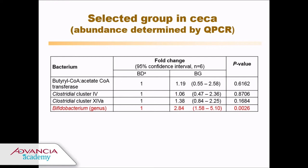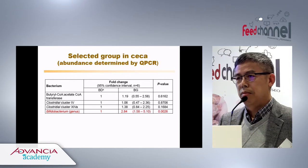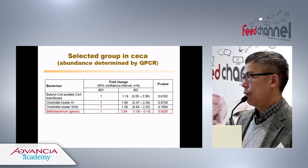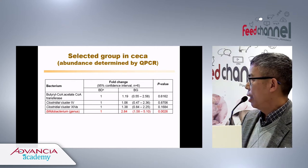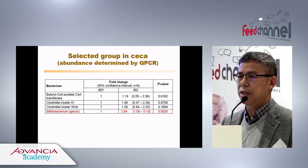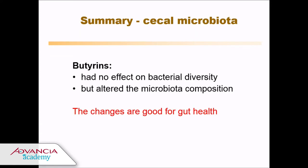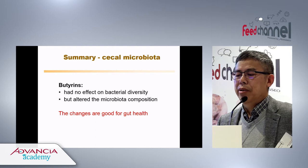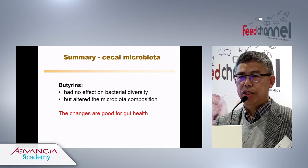We followed up with qPCR analysis measuring key enzymes for butyrate production and didn't see a difference between groups. For Clostridium clusters — major butyrate-producing bacteria — we also saw no significant difference. However, for Bifidobacteria we again saw increased density, and from the 16S data, species diversity was also increased. The conclusion for cecal microbiota is that butyrate has no effect on bacterial alpha diversity but can alter microbiota composition, and these changes are beneficial for gut health.